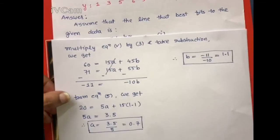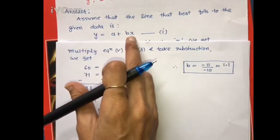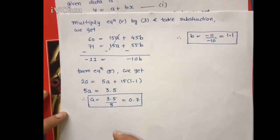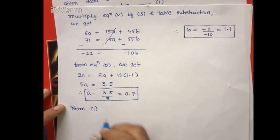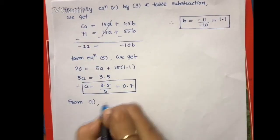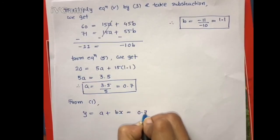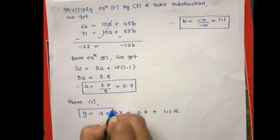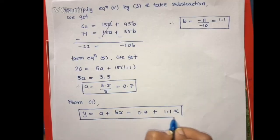Our assumed equation of line is y = a + bx. Substituting the values of a and b into equation 1, we get y = 0.7 + 1.1x. This is our line that best fits the given data of x and y.